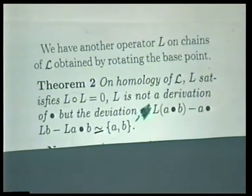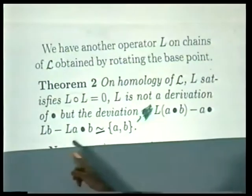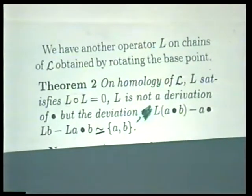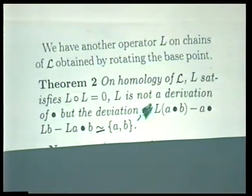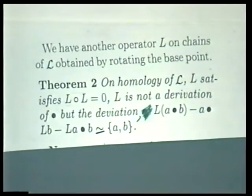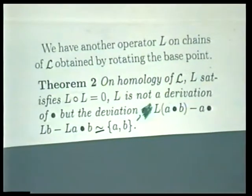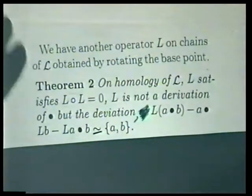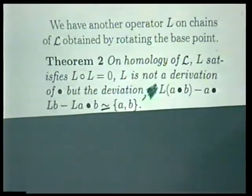We didn't really need to introduce the bracket. We could have just said, here's this multiplication — very simple to define — L is already there. If you form this deviation from being a derivation, you get a binary operation that satisfies Jacobi and compatibility with the multiplication. It follows formally that L is a derivation of this bracket, but it's not a derivation of dot. These algebras are called Batalin-Vilkovisky algebras. So the free loop space homology has the structure of a BV algebra.